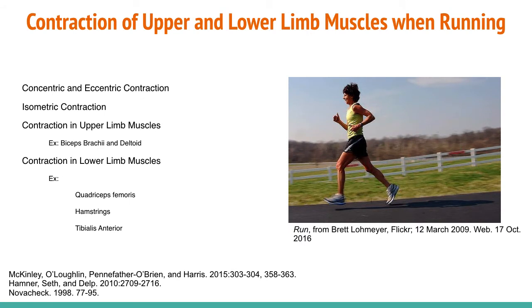When an individual makes the conscious decision to get up and go for a run, voluntary muscle contraction will take place in both upper and lower limbs to produce movement. Many muscles become engaged and work together in order to produce the body movement required in the run. Isometric, concentric, and eccentric contraction are three forms of important muscle contraction that take place in the upper and lower limbs while running.